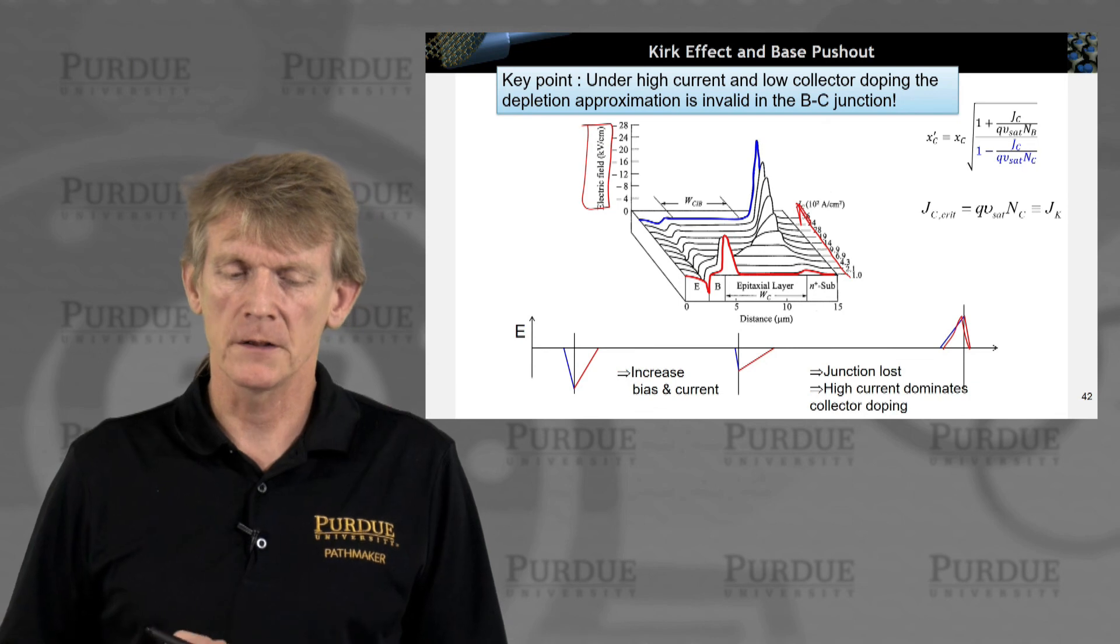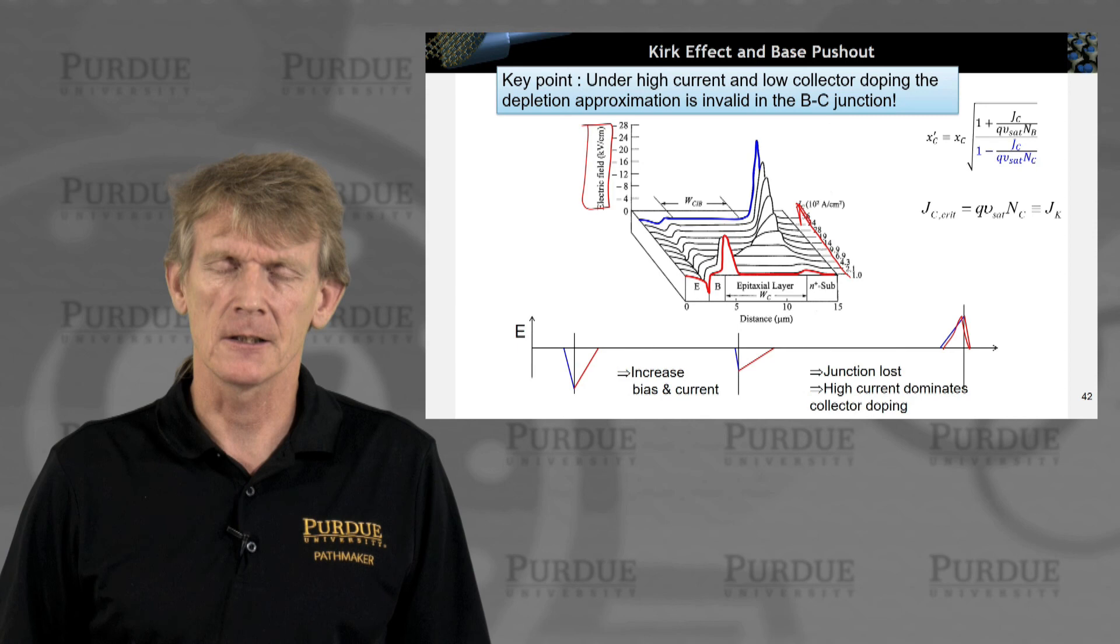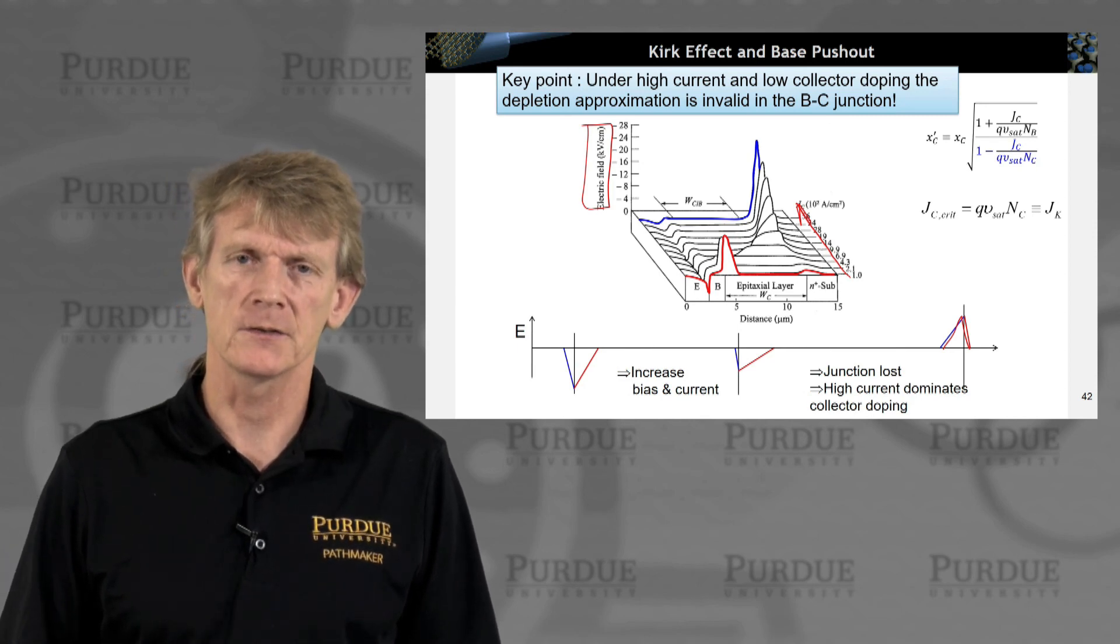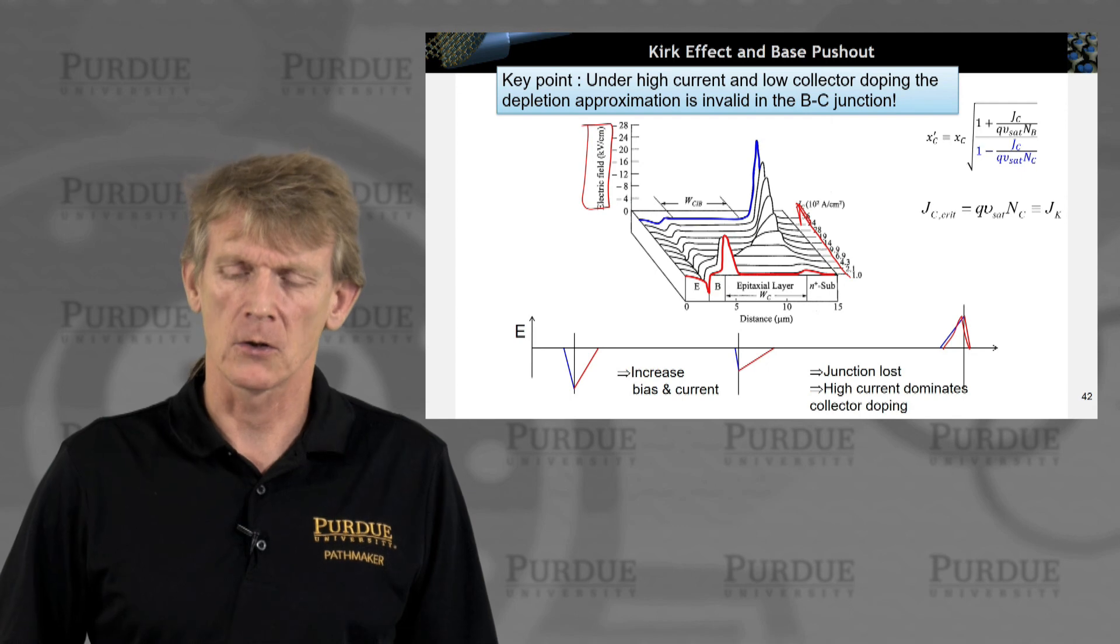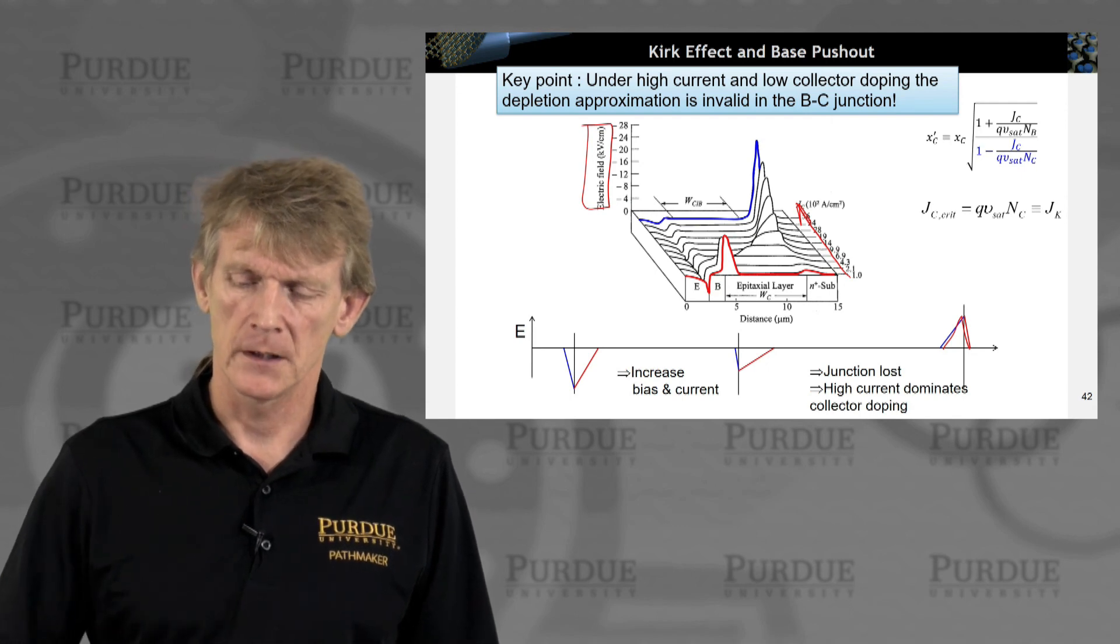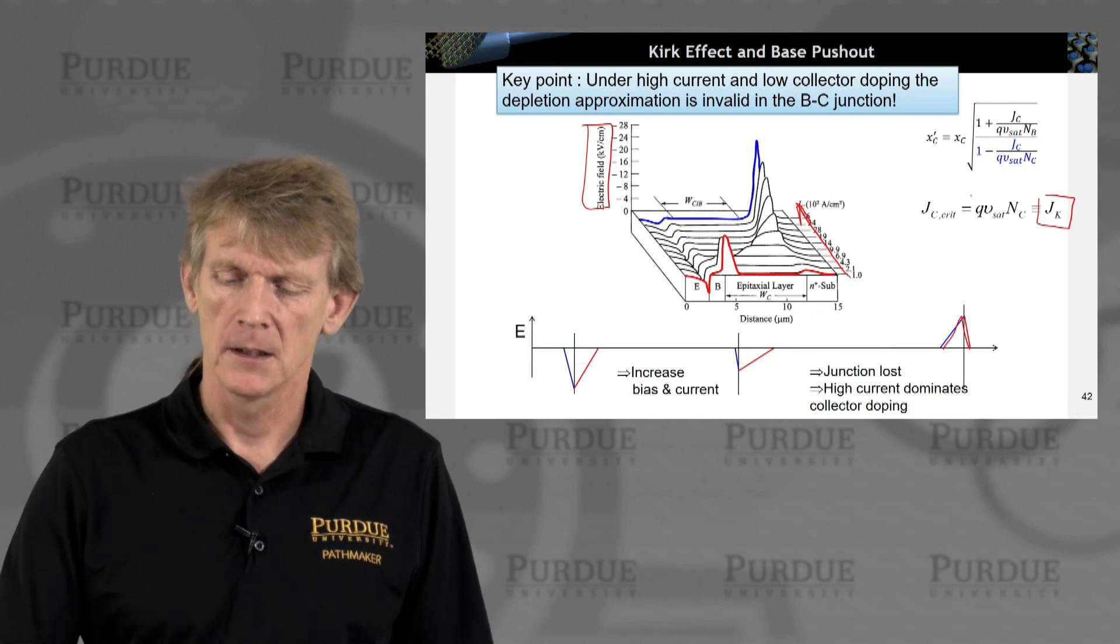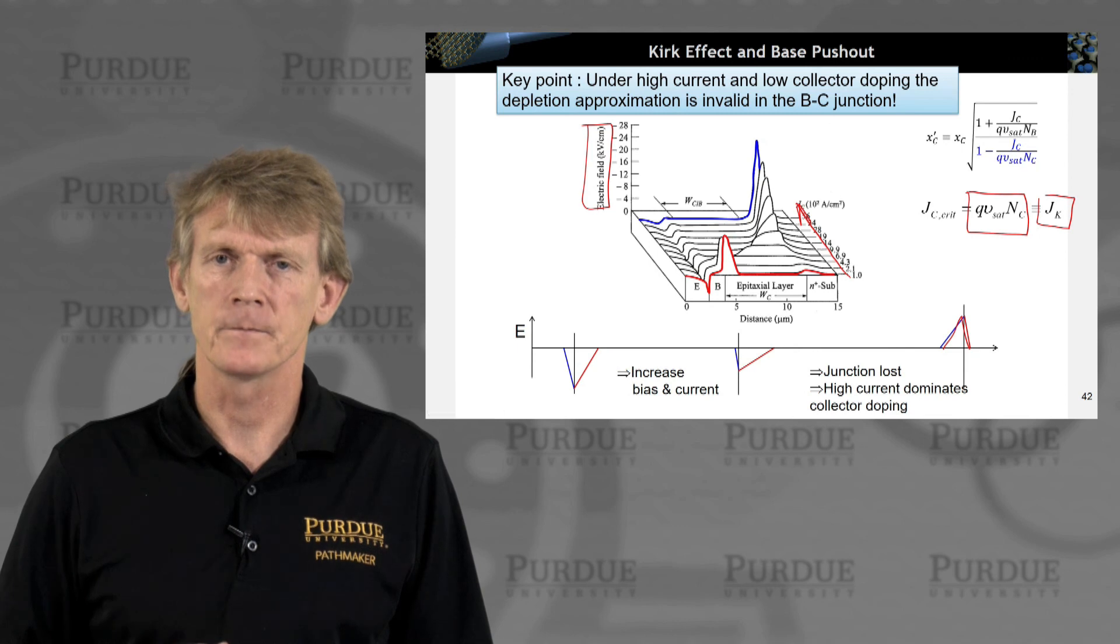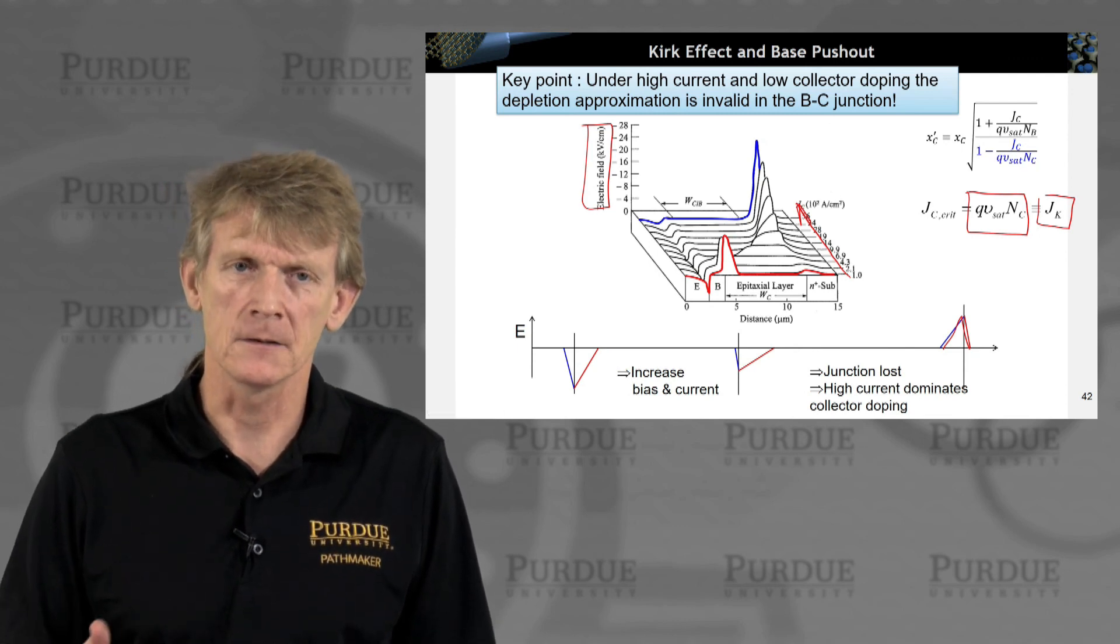Now this is called the Kirk effect. A scientist who figured out, an engineer who figured it out, of why current gain couldn't be increased as you increase voltages that are applied on the collector side and as you reduce doping on the collector side.